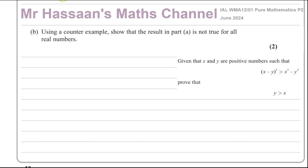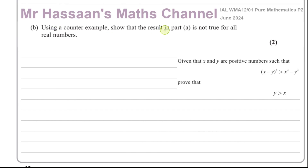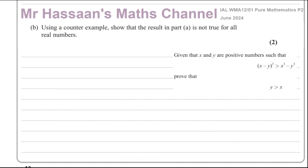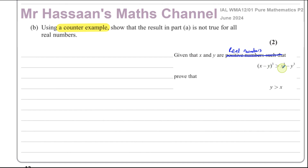For part b, it says: using a counter-example, show that the result in part a is not true for all real numbers. So now x and y can be any real numbers, including positive or negative — not just positive as before. We need to find one example where x minus y cubed is greater than x cubed minus y cubed, but y is not greater than x.